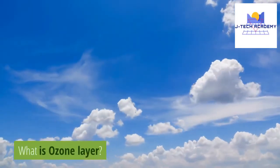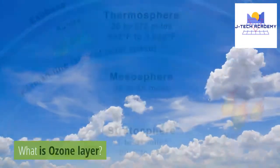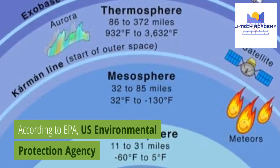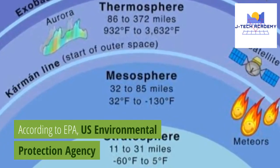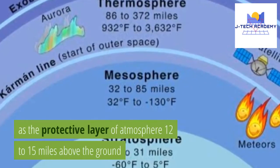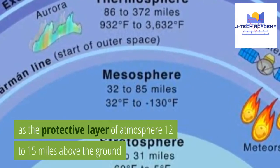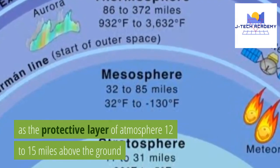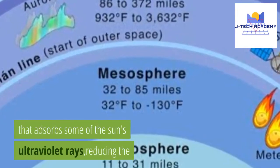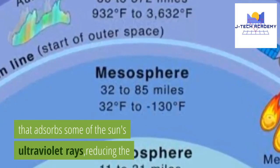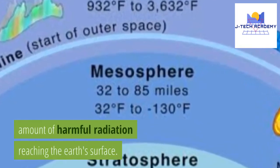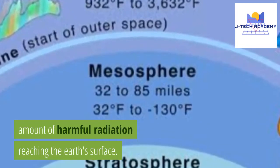What is ozone layer? According to the EPA, U.S. Environmental Protection Agency, it is the protective layer of atmosphere 12 to 15 miles above the ground that absorbs some of the sun's ultraviolet rays, reducing the amount of harmful radiation reaching the Earth's surface.